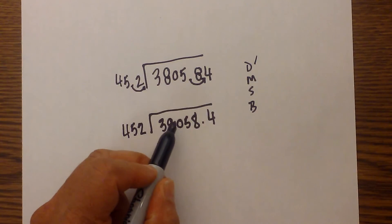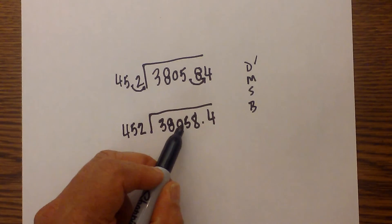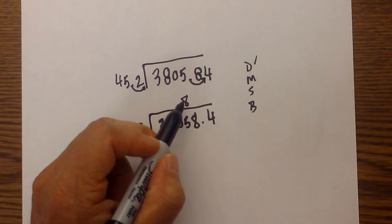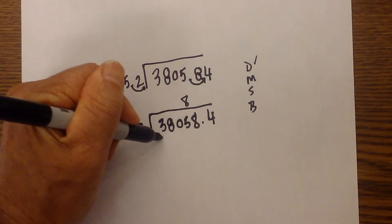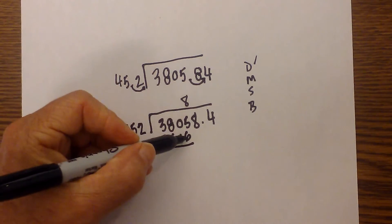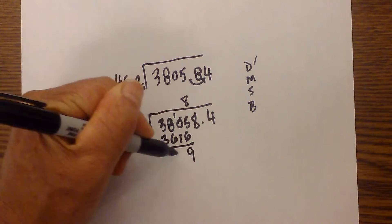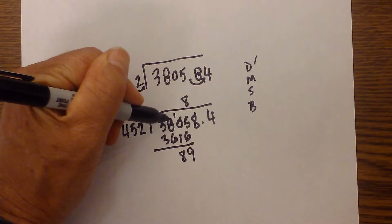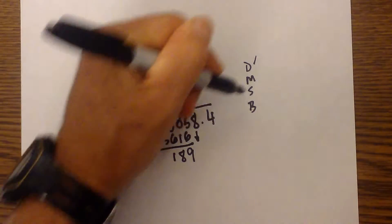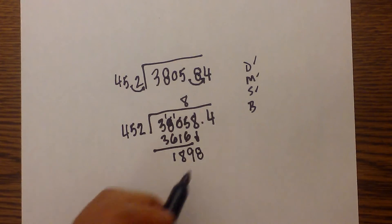Can't divide into 3, can't divide into 38, can't divide into 380, but 3,805 — and if you multiply, I believe that will go 8 times. We next multiply: 8 times 452 is 3,616. Next we subtract: 5 minus 6 is 9, bring over the 1, that becomes 8. We had to borrow one more, so that becomes 189. We now bring down, and so we have 1,898.